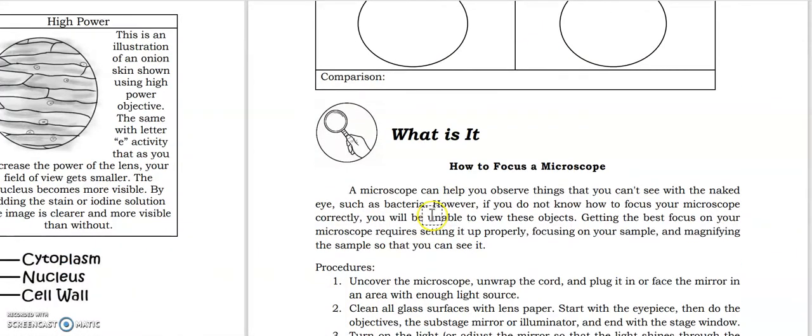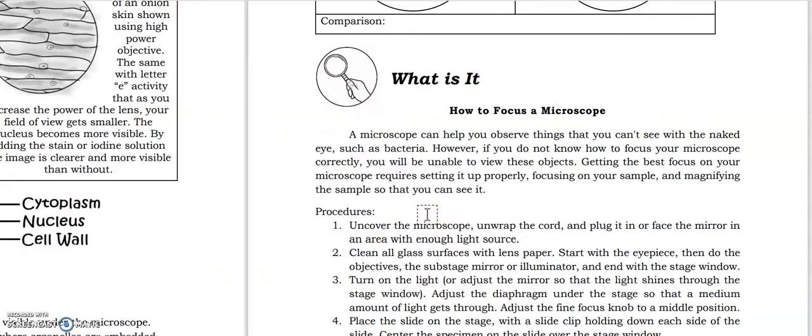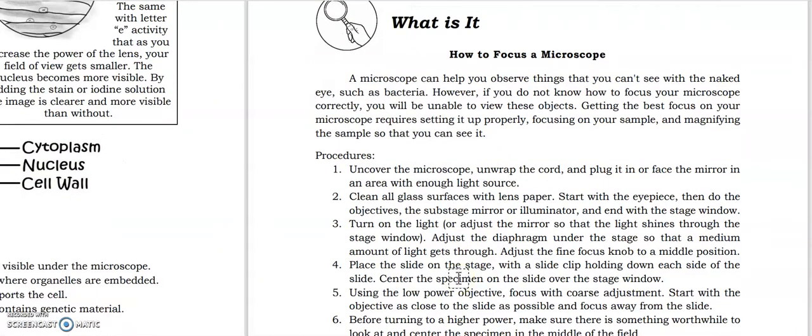And for the What Is It portion, so how to focus the microscope. So these are the steps on focusing the microscope. First is you uncover the microscope and wrap the cord and plug it in our face to mirror an area with enough light source. Clean all glass surfaces with lens paper. Start with the eyepiece, then do the objectives, the substage mirror or illuminator, and end with the stage window.